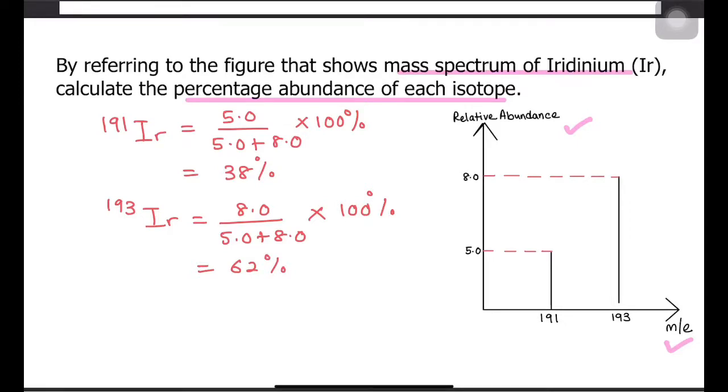Alternatively, since there are only two isotopes listed for iridinium, you can calculate the percentage abundance of the second isotope by simply subtracting the percentage abundance of the first isotope from 100 percent. There you have it, a second alternative which has a much simpler working.